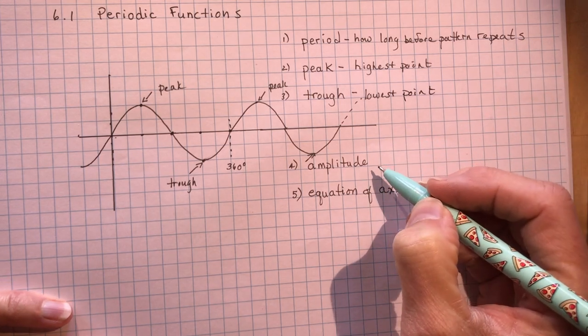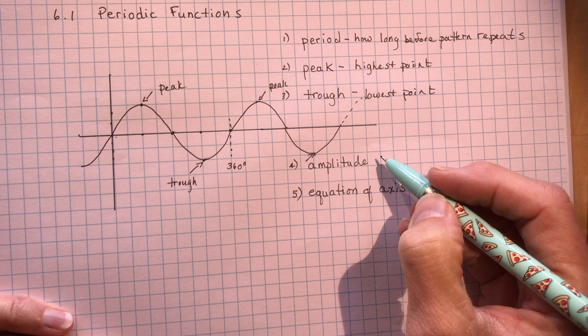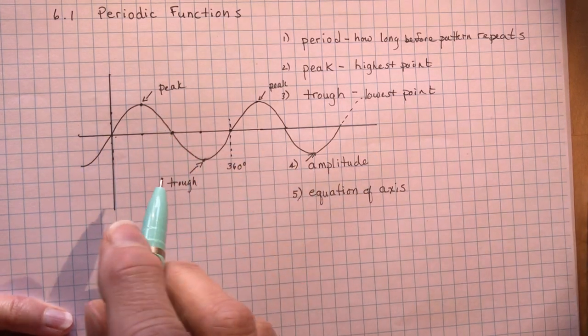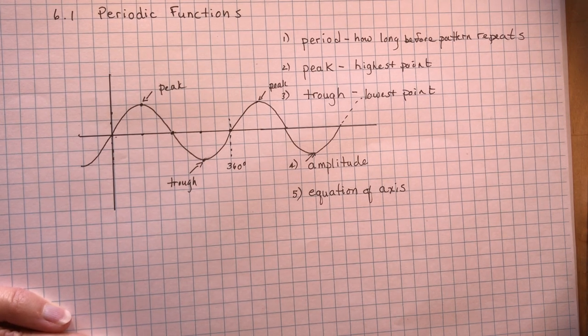And the amplitude. Now here's a word that you haven't seen before. The amplitude is the distance between the axis. Maybe we should have described the axis first. But the axis is this line right here in the middle.